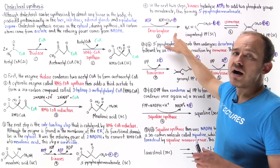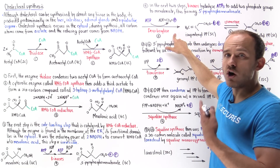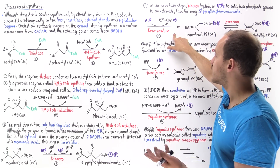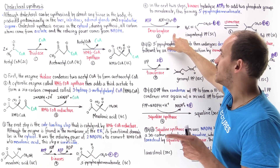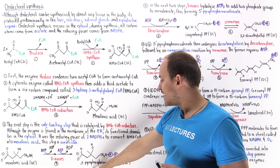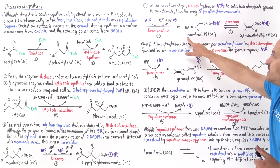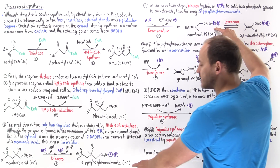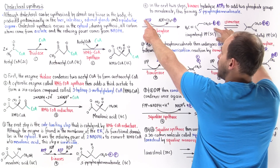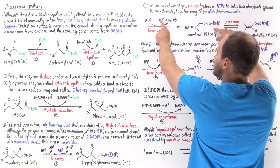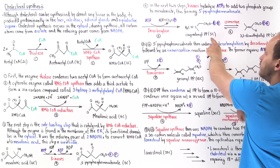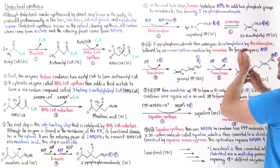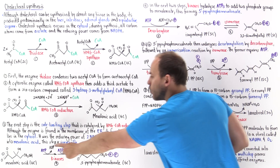The next step is a decarboxylation step where we remove a carbon atom in the form of carbon dioxide, and this also utilizes an ATP. So we transform the 5-pyrophosphate mevalonic acid into isopentanyl pyrophosphate — IPP — which is a five-carbon molecule. That makes sense: we start with six carbons, hydrolyze an ATP, remove carbon dioxide, and now we have a five-carbon molecule. To form IPP, we need three ATP molecules total.